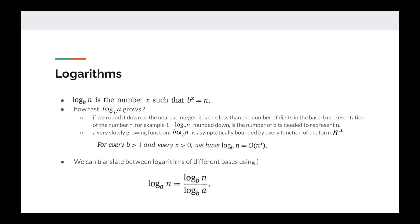The next category of common time complexity functions we'll look at is logarithms. Logarithms are log base b of n — the number x such that b^x = n. How fast does log_b(n) grow? If we round it down to the nearest integer, it is one less than the number of digits in the base-b representation of the number n.